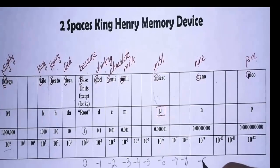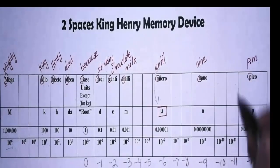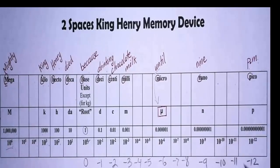Minus seven, minus eight, minus nine, minus ten, minus eleven, minus twelve. And there you go, you have pico minus twelve, nano minus nine.